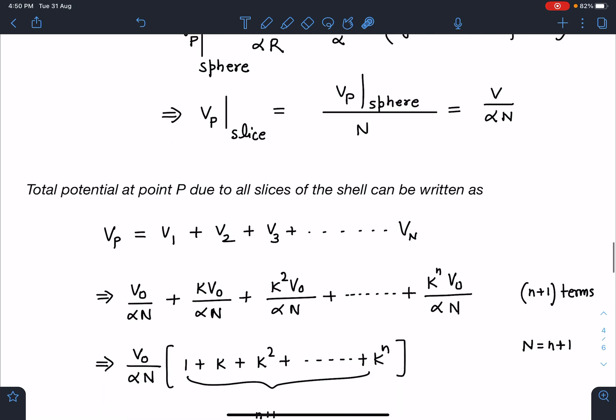Here I can write total potential due to all the slices. It will be the sum of individual slices: V₁ + V₂ + V₃ up to Vₙ, where N is a large number, infinite you can say. This will become V₀ by αN first one, then next one is having kV₀ so kV₀ by αN.